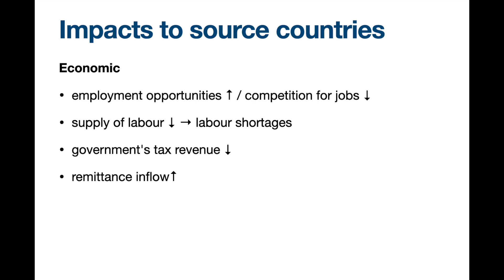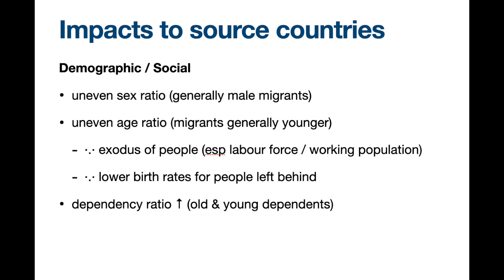So the remittance sent back might only be $5,000 out of $10,000 earned. If that same person worked and spent all $10,000 in Hong Kong, all the money would stay in the local economy. Demographically, a mass exodus — meaning a large group of people leaving — typically affects the gender balance, since construction workers are usually young men. Females are left behind, affecting the gender ratio.